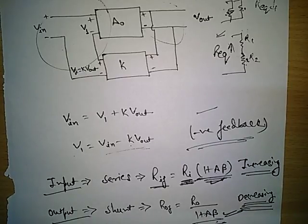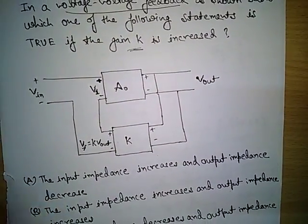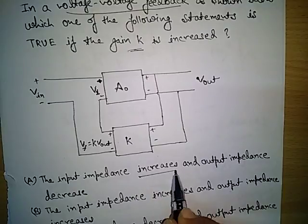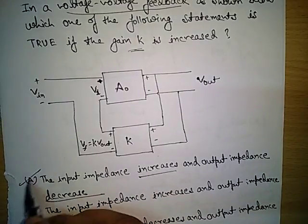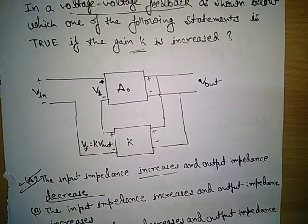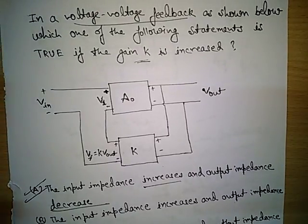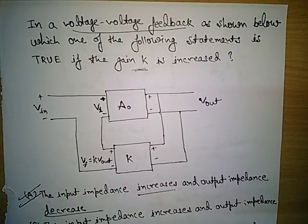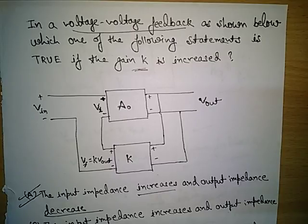Overall: input impedance increases and output impedance decreases, so the first option is correct. I hope this video has explained feedback amplifiers, their different combinations, and nomenclature clearly. You can solve other questions to get more concept related to this type of problem. In coming days I will come with more videos — thank you so much for watching.